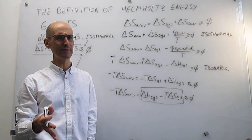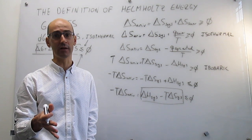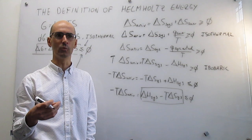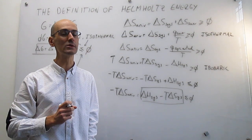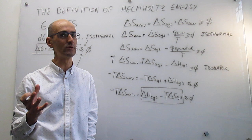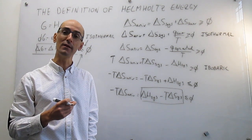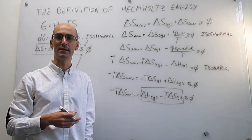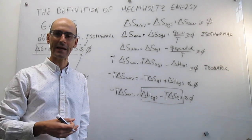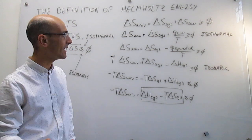The Gibbs energy forces you to work under constant temperature and constant pressure. The question is, what happens if you don't have those conditions? For example, what happens if you have constant temperature but constant volume, as you would have in bomb calorimetry? That's what the Helmholtz energy is really going to allow you to do.